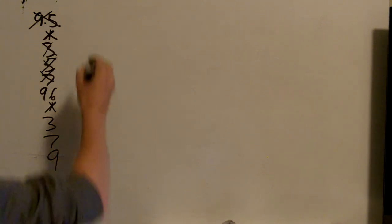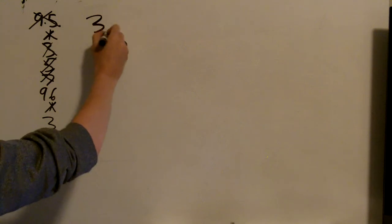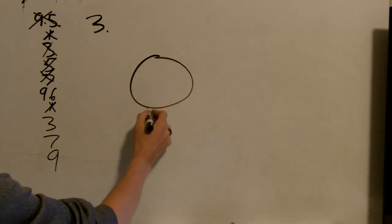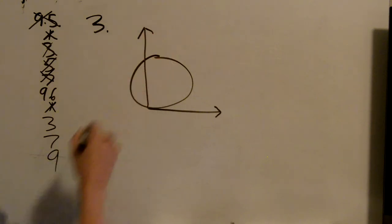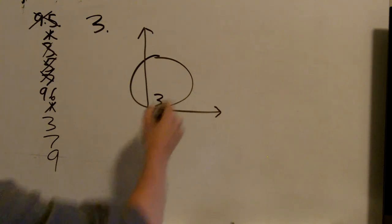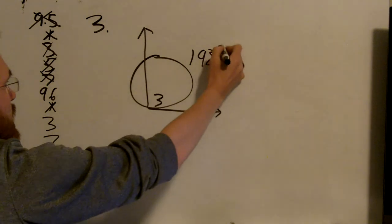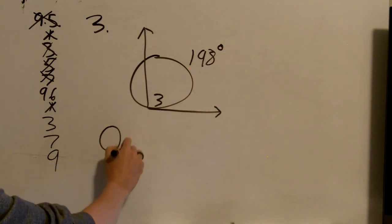Number 3. So number 3, we have this diagram. We have a tangent. And we have a secant. And we have, that we want to know what angle 3 equals. And we know that this is 198 degrees. So this one is on the circle.